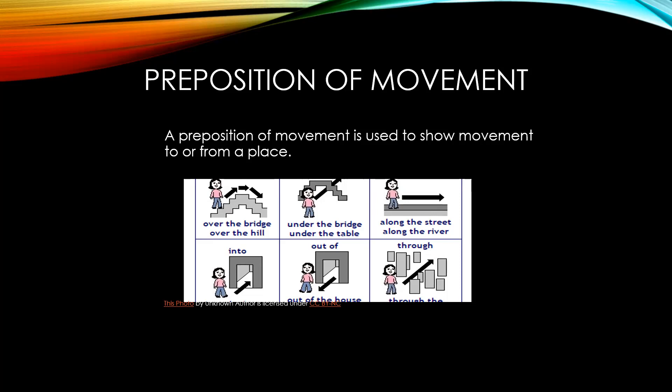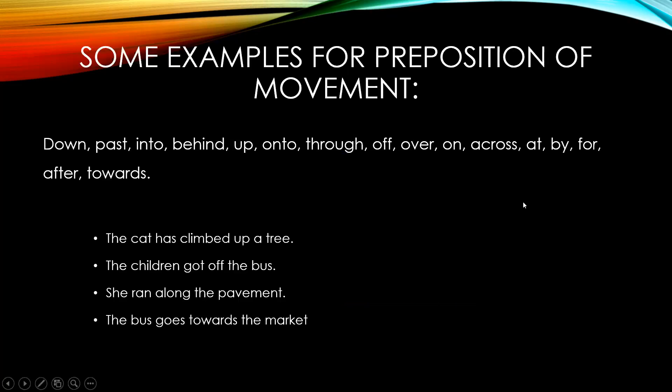Essentially, they describe how something or someone moves from one place to another. The most commonly used preposition of movement is 'to', which usually serves to highlight that there is movement towards a specific destination. Here, over the bridge or over the hill, under the bridge or under the table, along the street, along the river. Just see the difference between over, under, and along. Try to understand the difference by seeing this picture.